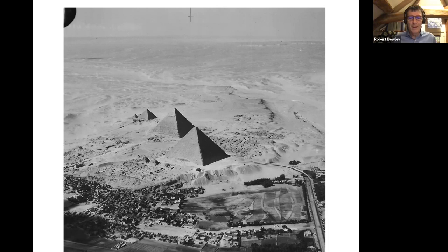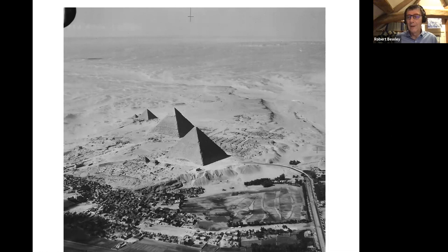I included this photograph of the pyramids in Egypt because it's such a wonderful photograph, taken by aviators doing a vertical survey who also took oblique photography because they enjoyed what they were doing. There are two types of air photographs — oblique and vertical — and what I'm showing is the opportunity to record using oblique photographs, simply with a handheld camera leaning out of an airplane or helicopter.